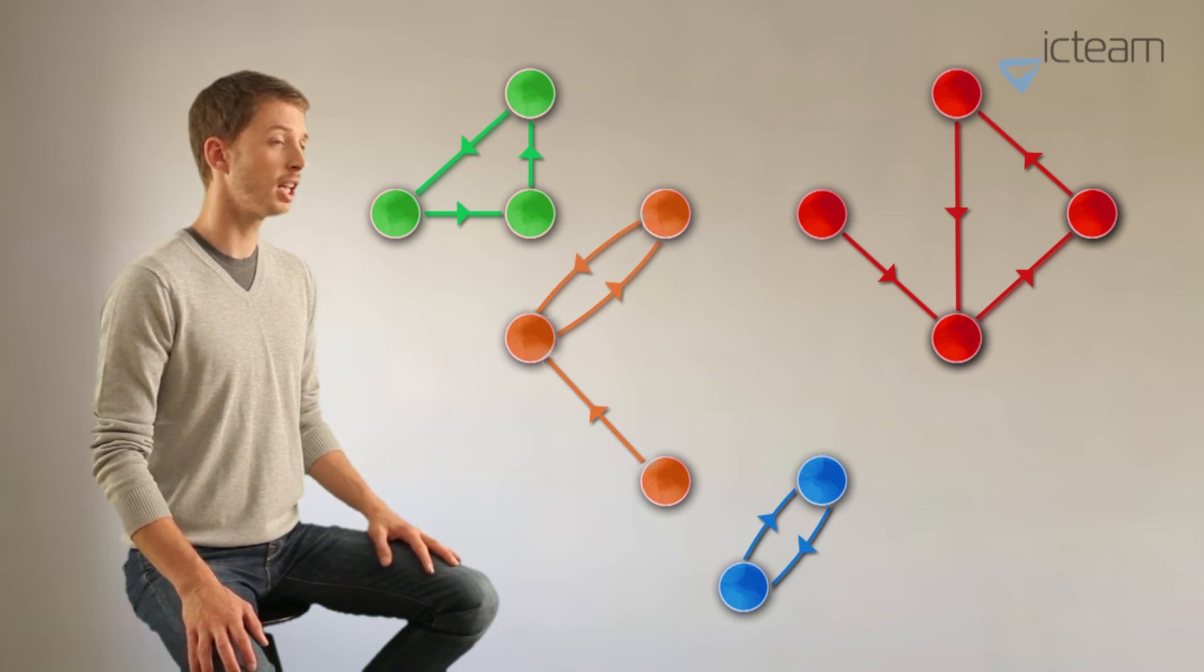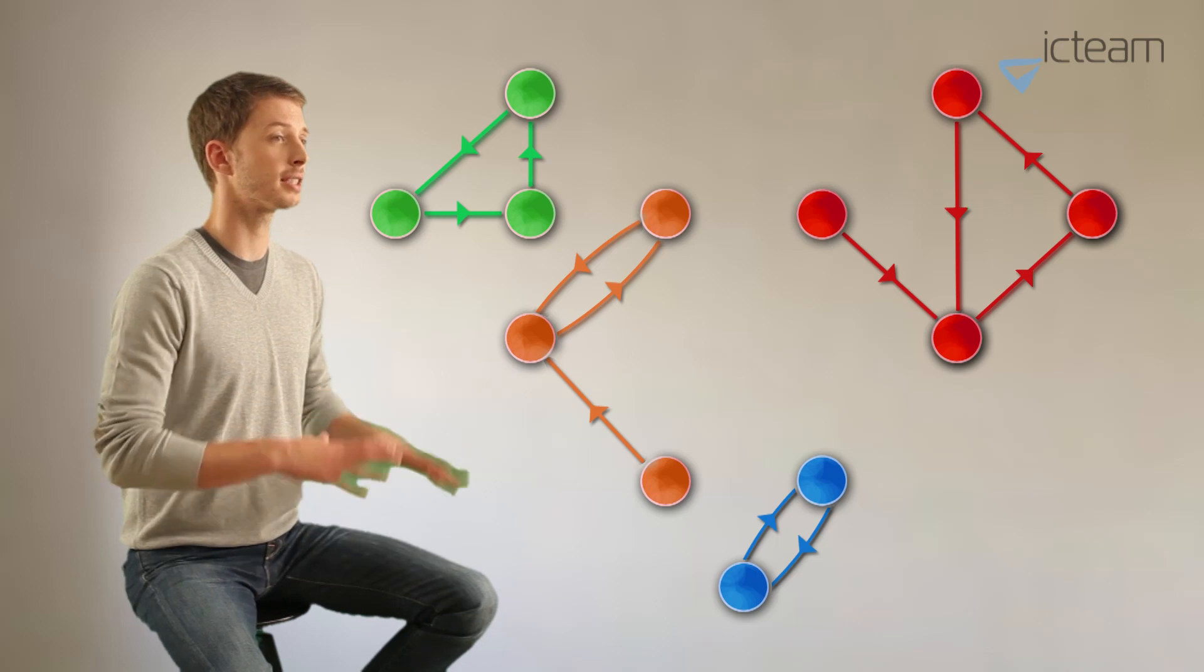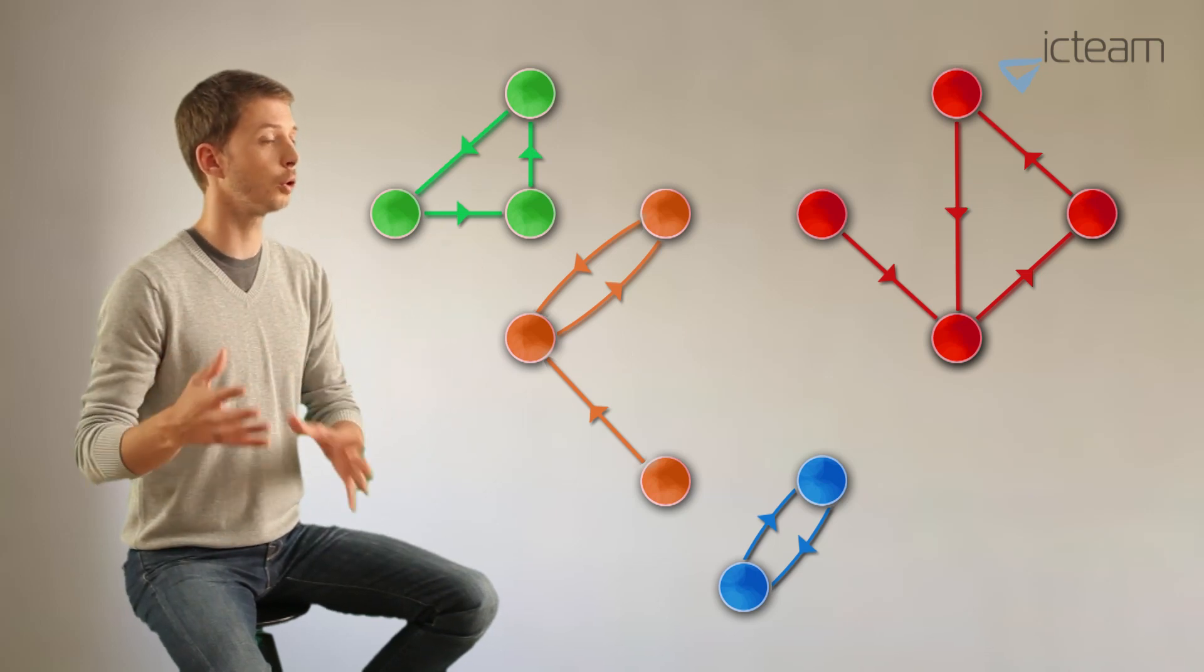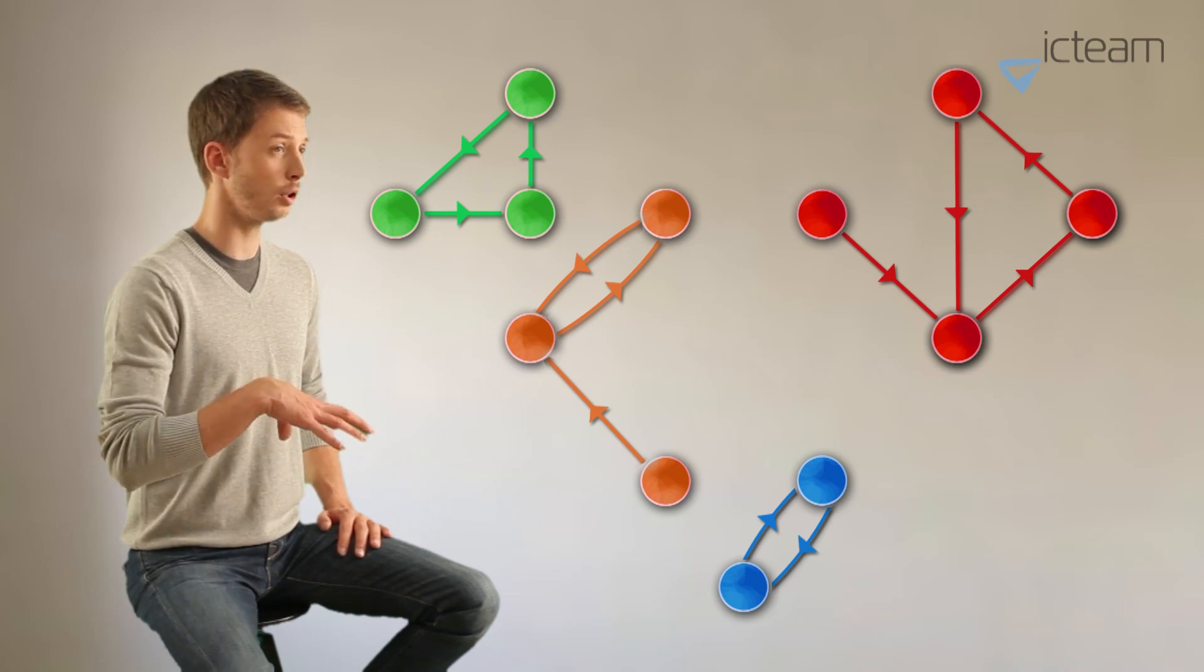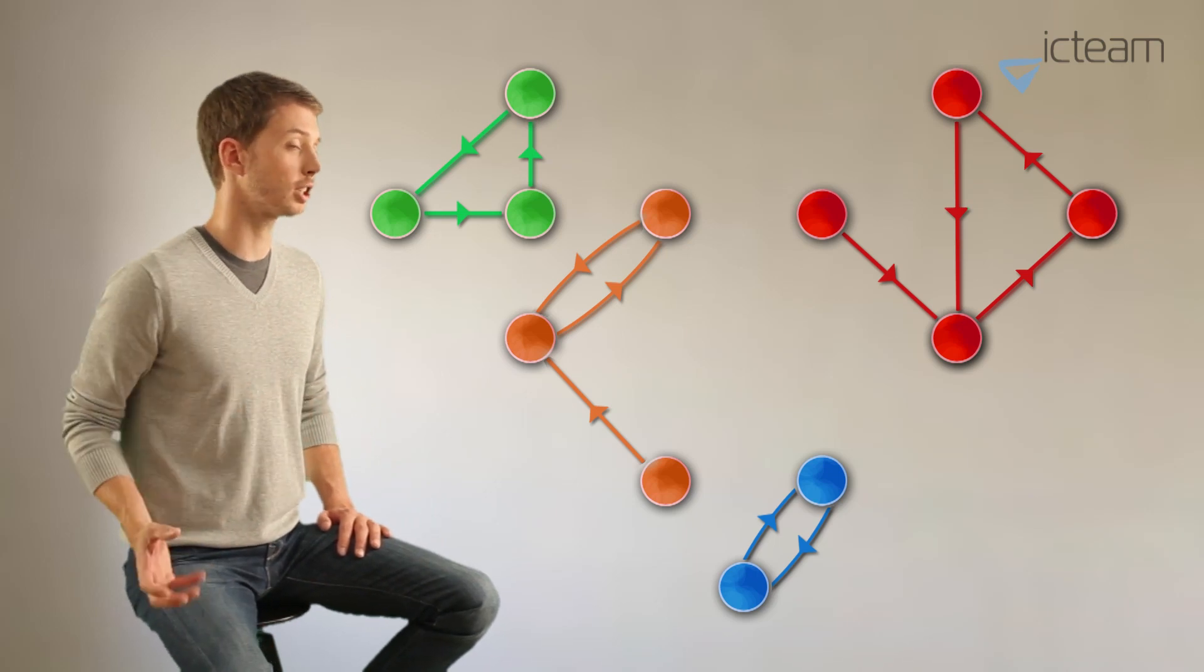By construction, this resulting graph contains many small structures called weakly connected components, and we simply define the communities as the sets of nodes spanned by each of those connected components.